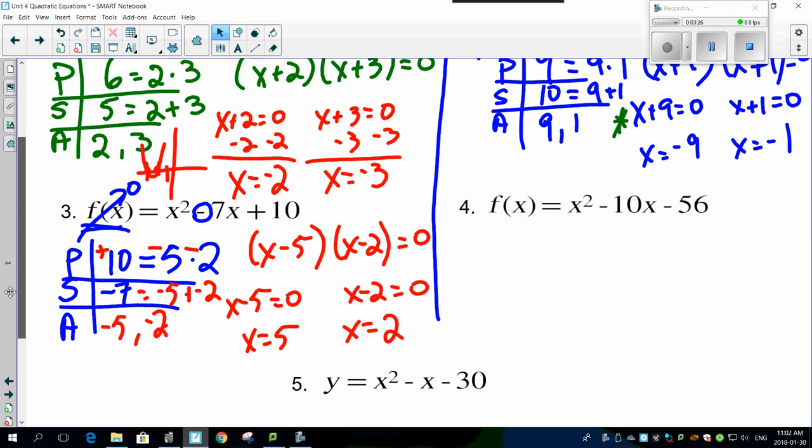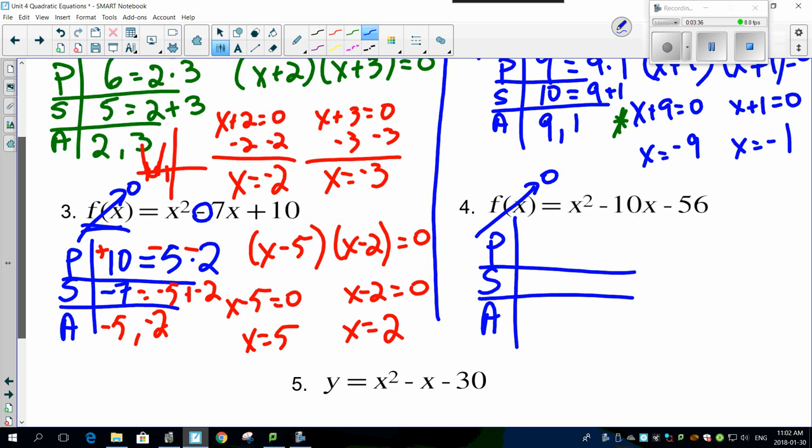Same thing goes with this one now. All right, here we go. f(x) has to equal zero, so now you got PSA. There it is. This is -56, this has got to be -10.